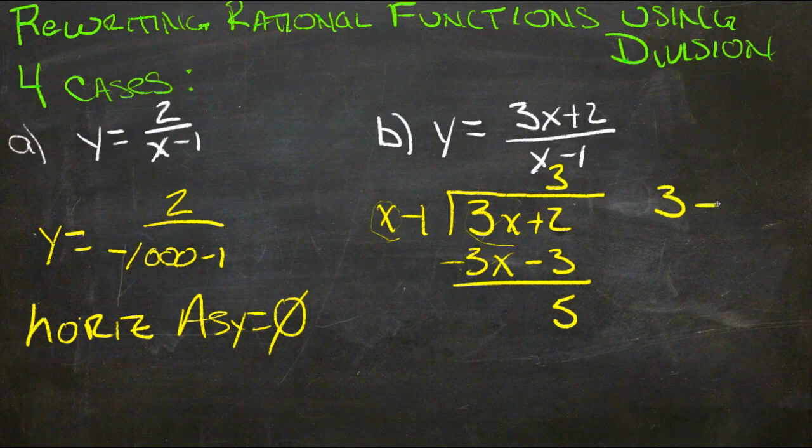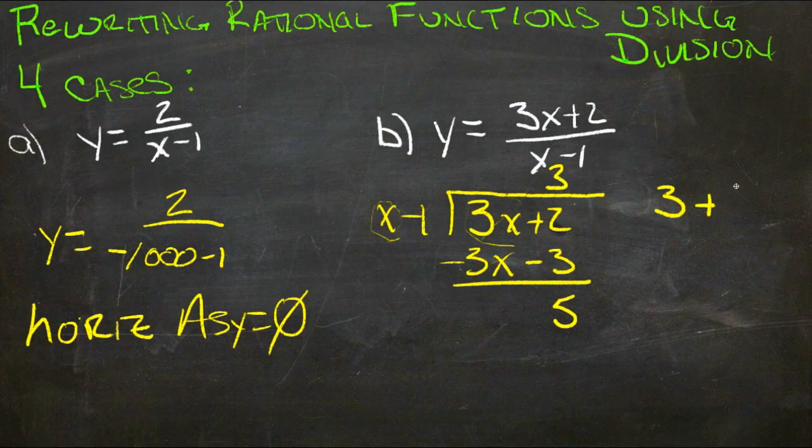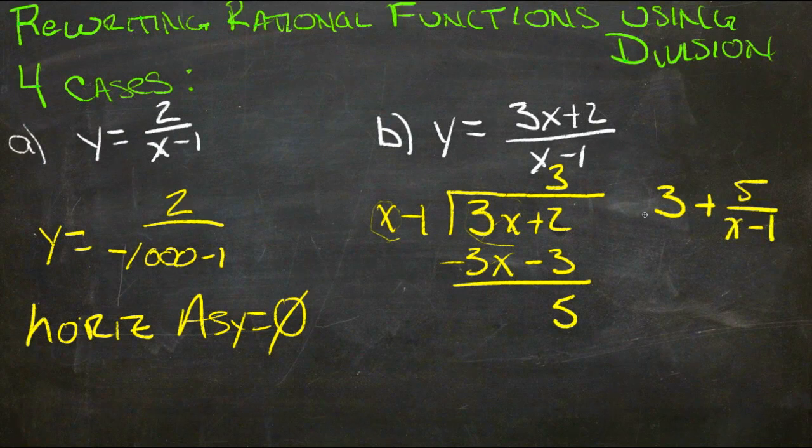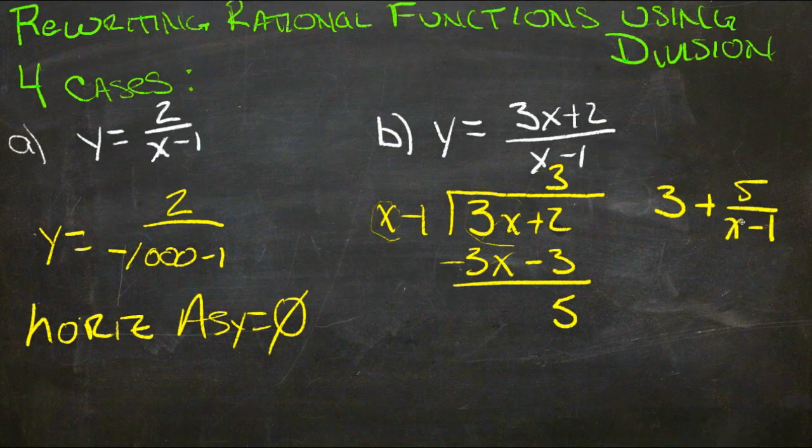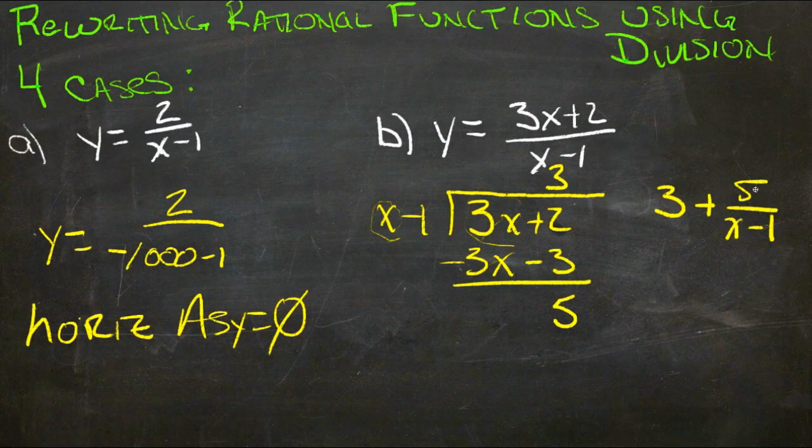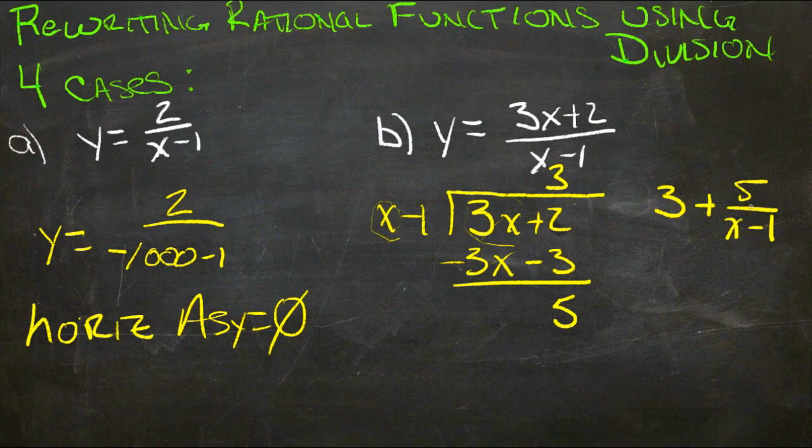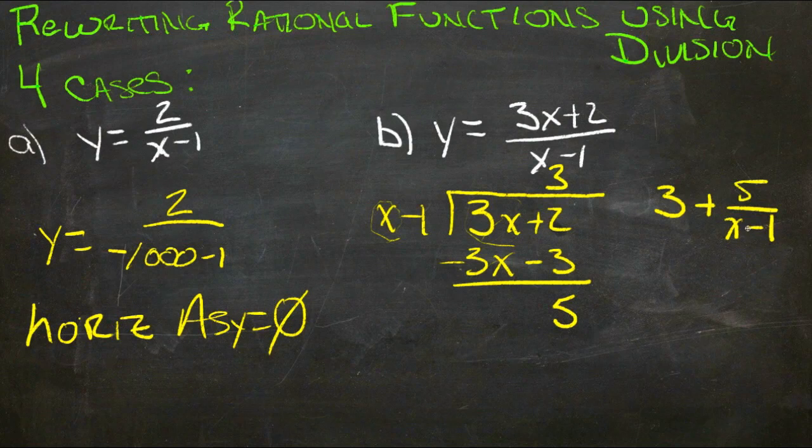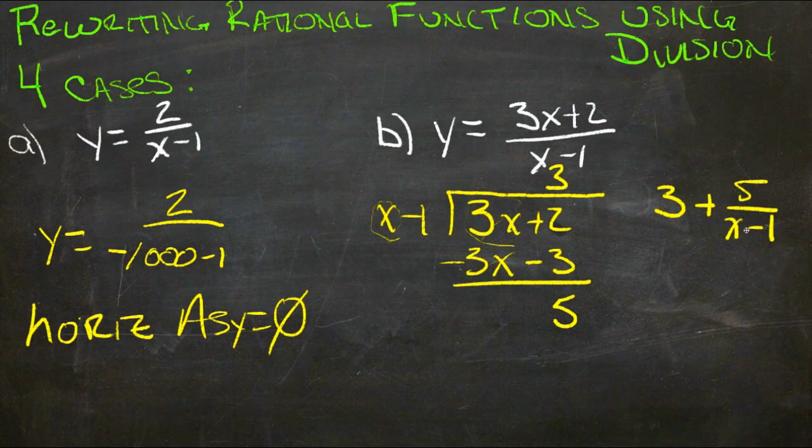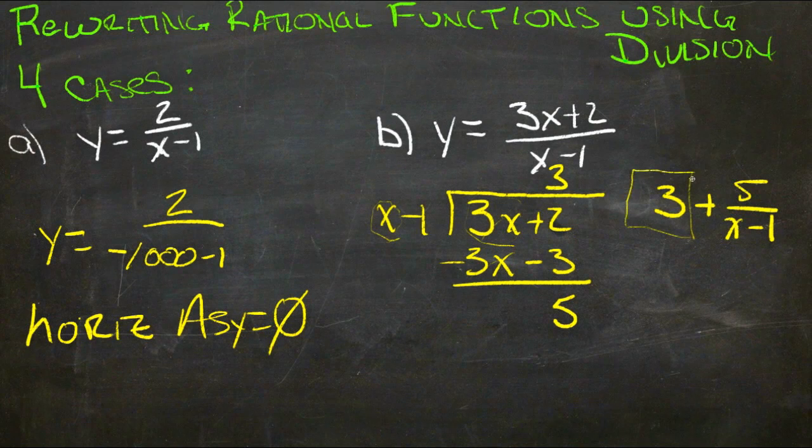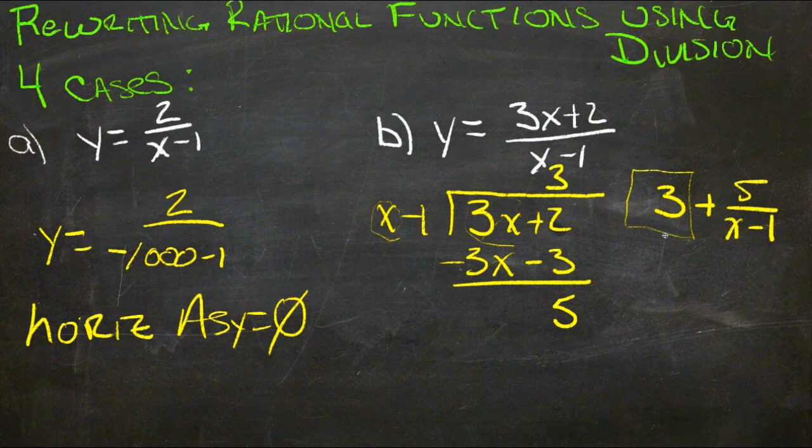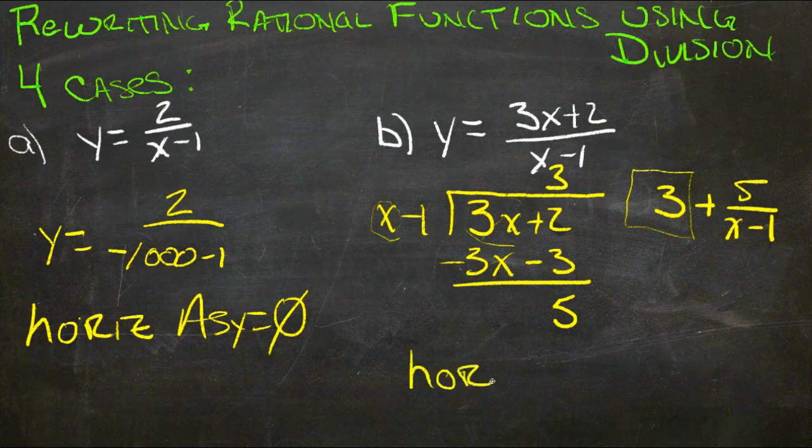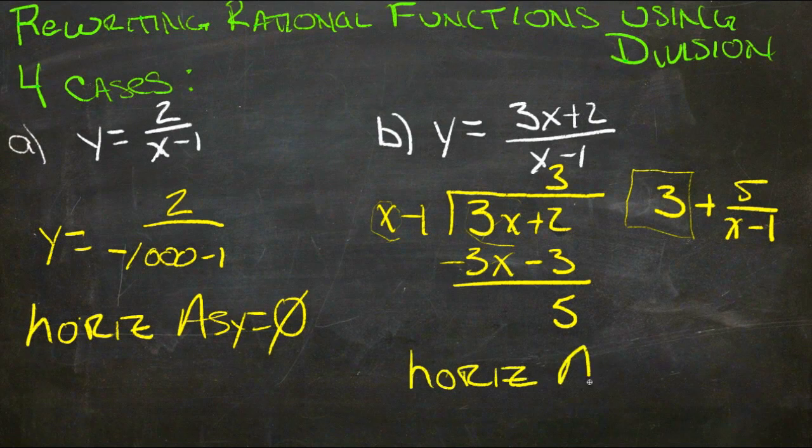So 3 plus 5 over x minus 1 becomes what we get when we reduce this whole thing. Now, as x starts to get bigger and bigger, this fraction here gets closer and closer to zero, because 5 is going to be divided by larger and larger numbers. By the time you get 5 divided by 10 million, 5 ten millionths is pretty small. So really all that we end up with here is the 3 as x gets bigger. So what this function approaches is y equals 3, and our horizontal asymptote is 3.